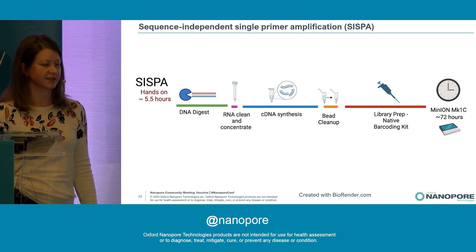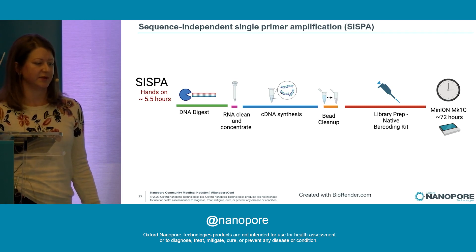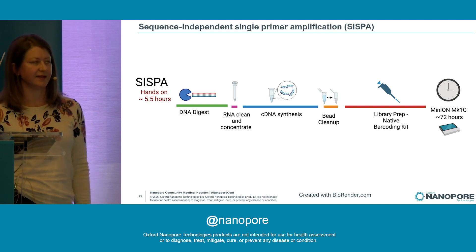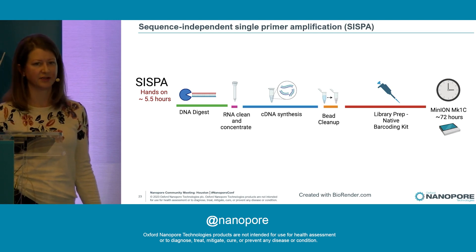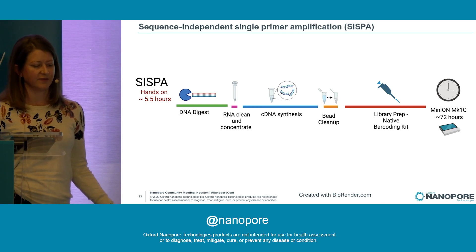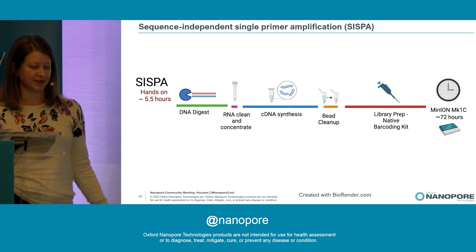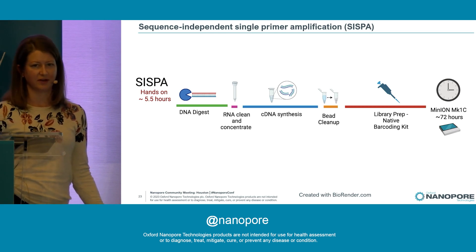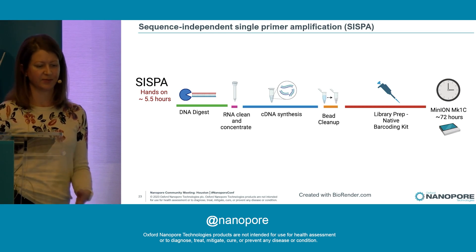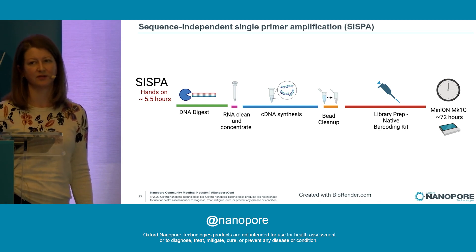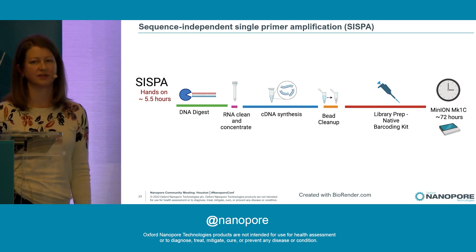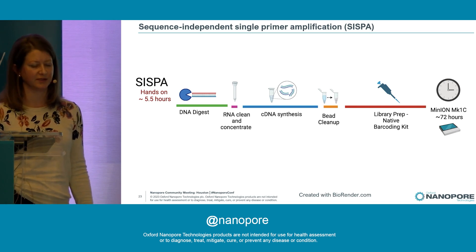This is an example of our SISPA sample protocol pipeline. Generally our hands-on time is about six hours. We isolate our viral nucleic acid, do a DNA digestion, do an RNA clean and concentrate, do the SISPA protocol, and then prep all of our samples with a native barcoding kit. We typically sequence on a MinION Mk1C for about 72 hours.